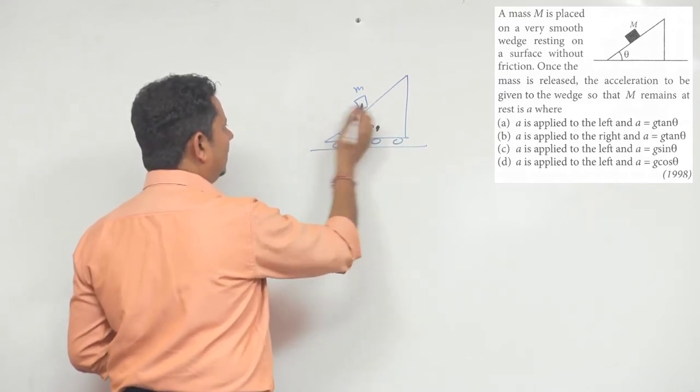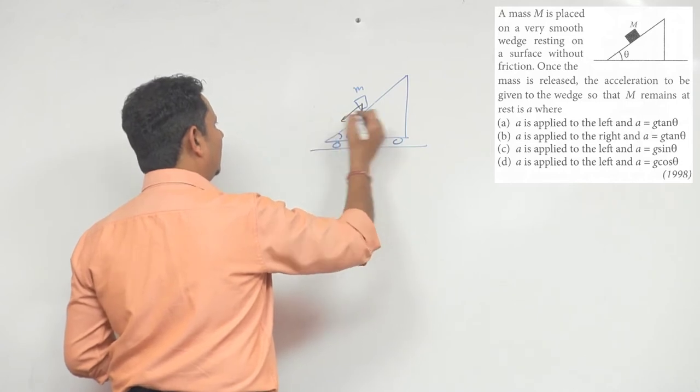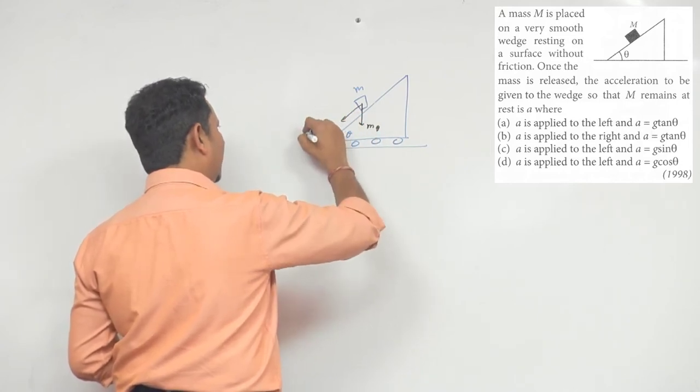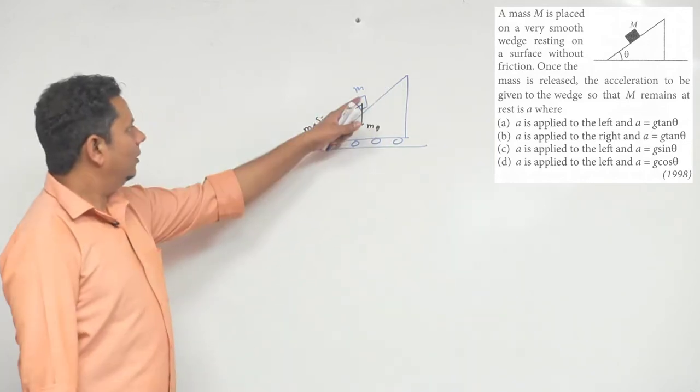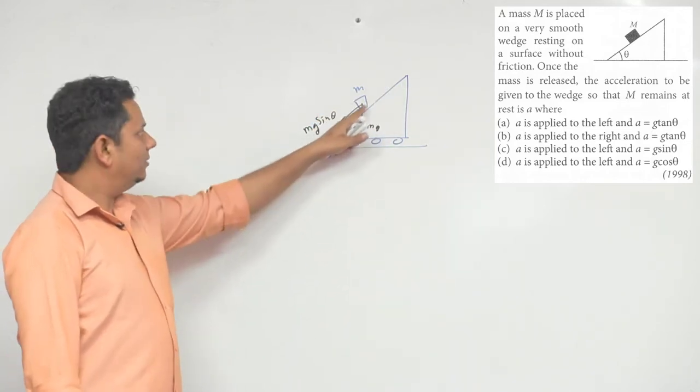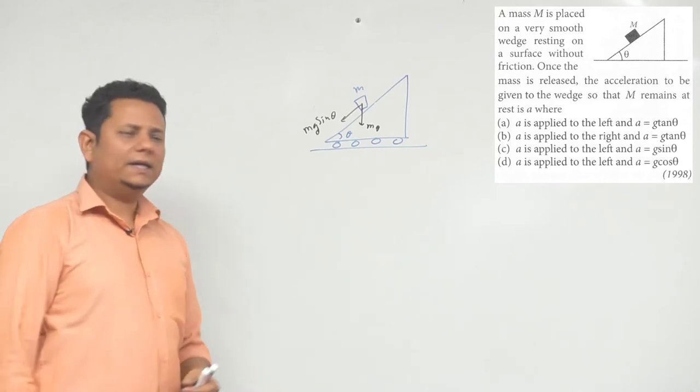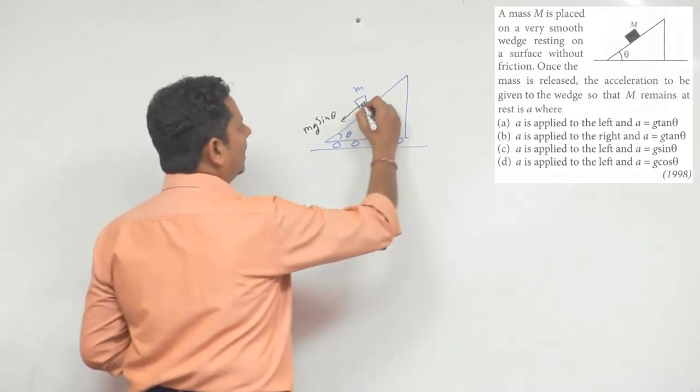If you draw the free body diagram, a force mg is acting. Due to that mg, a force or acceleration of g sin theta will come in this direction, which is mg sin theta. Since it's frictionless, there's no friction above to stop it. So the g sin theta force that comes will move it in this direction.